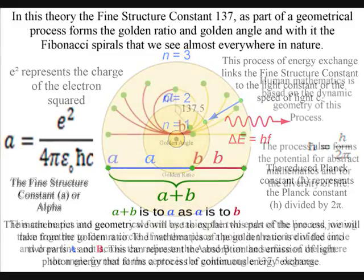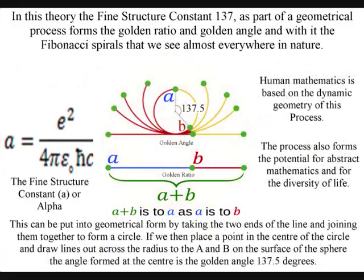This can be put into geometrical form by taking the two ends of the line and joining them together to form a circle. If we then place a point in the center of the circle and draw lines out across the radius to the A and B on the surface of the sphere, the angle formed at the center is the golden angle, 137.5 degrees.